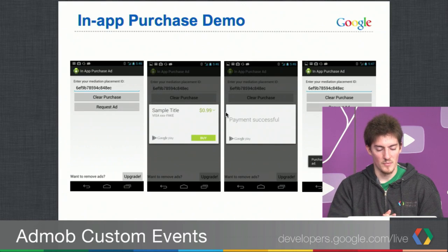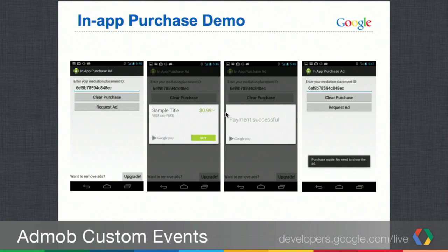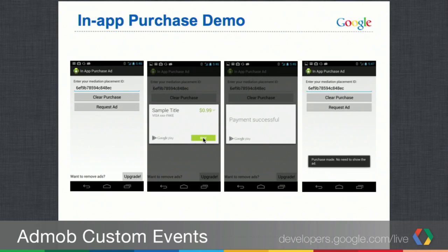In the demo, with the mediation placement ID set up, requesting an ad before any purchase shows this view in the ad space: 'Want to remove ads? Upgrade.' Clicking the upgrade button launches the sample purchase flow. Once the purchase is made, the next ad request detects it was already made and shows nothing. For actual in-app billing, you'd go to the Android Developer Console and set up your in-app billing SKUs.